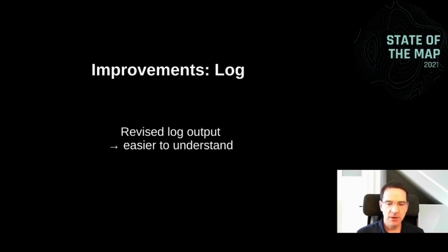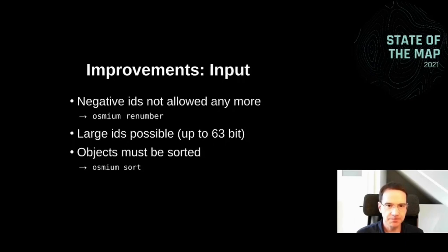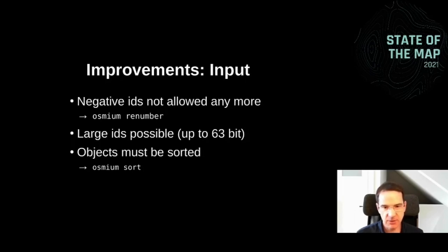Other improvements include the log output — everything the program prints while it runs is easier to understand, and you can decide how much output you want: quiet or more verbose. On the input side, there are also some changes. We no longer allow negative IDs, and objects in the file must be sorted. That is the case for almost all OSM files you'll find out there — all files from planet.osm.org or typical extracts conform to that. This restriction allowed us to do a lot of performance improvements.